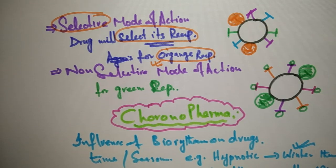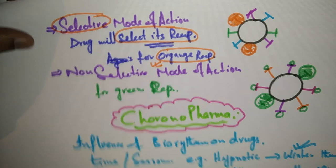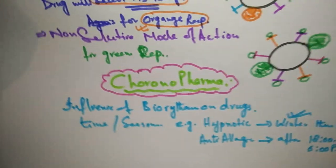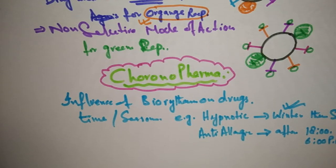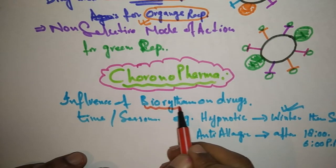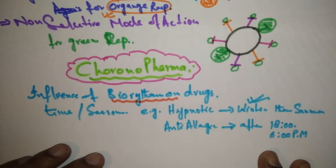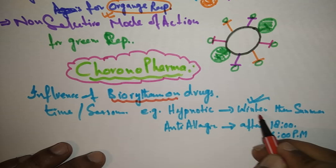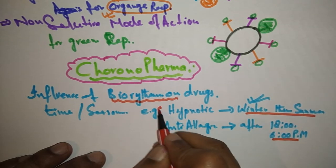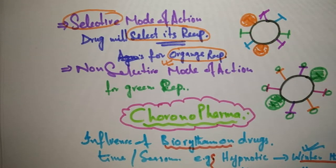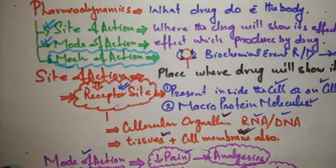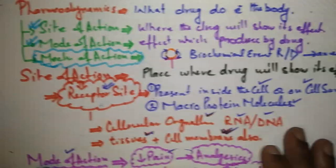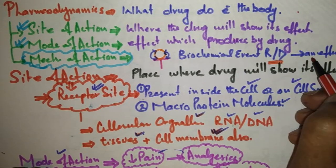Non-selective mode of action means the drug does not select its receptor and can go on every kind of receptor. In chronopharmacology, we check the bio-rhythm — drugs can change their activity according to season and according to time. Mechanism of action means the biochemical event between drug and receptor which leads to an effect.